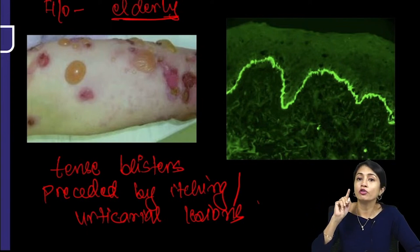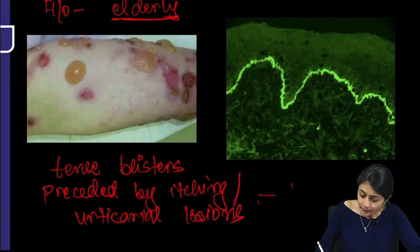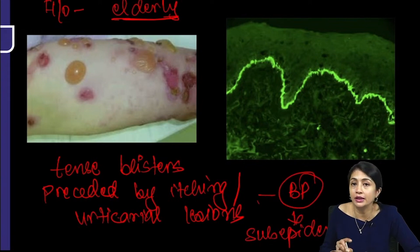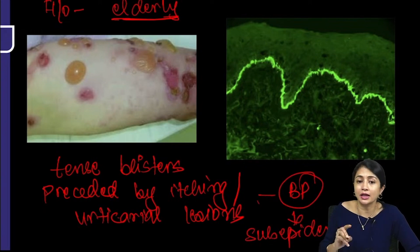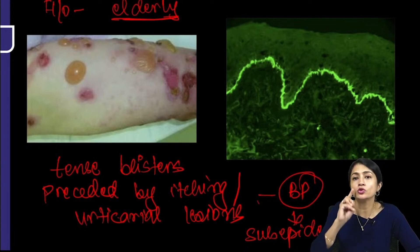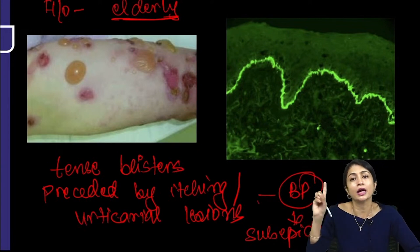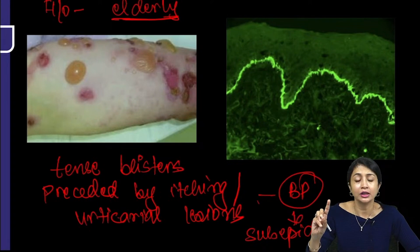In bullous pemphigoid the split is sub-epidermal — beneath the epidermis — that is why the blisters are tense. The antigens are BP antigen 1 and BP antigen 2, which are BP 230 and BP 180 respectively.